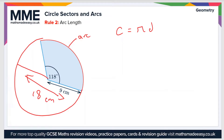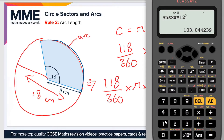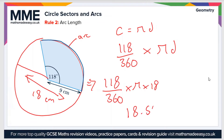Using the same logic as before, this arc — drawn in blue — is a fraction of the circumference: 118 divided by 360, multiplied by the full circumference, which is pi times d. So: 118 divided by 360, times pi, times 18. Plugging that into the calculator gives us 18.54 centimeters — that is the length of the arc.